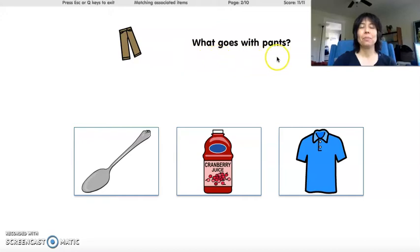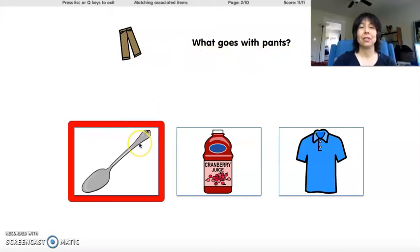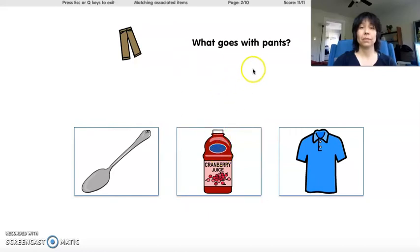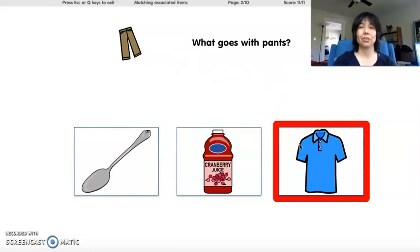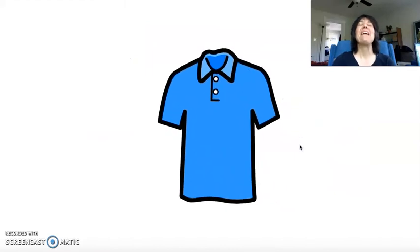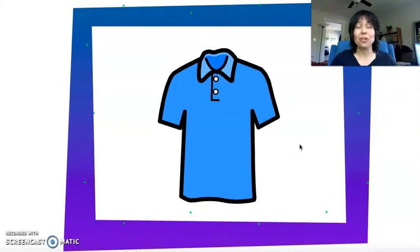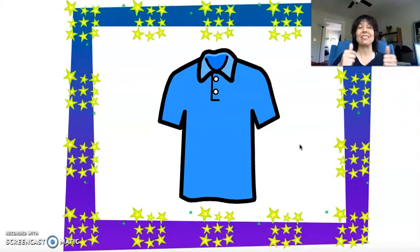What goes with pants? A spoon? Juice? A shirt? Yes! Pants and shirts go together. Good job! You put your shirt on and then your pants. Good job!